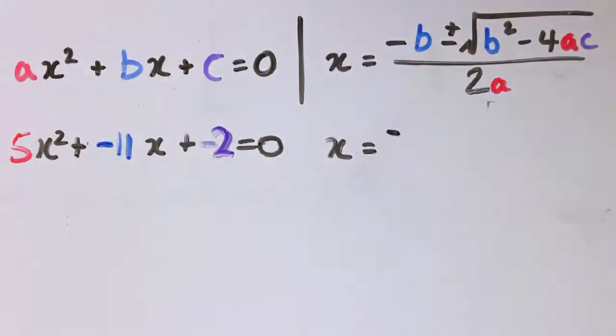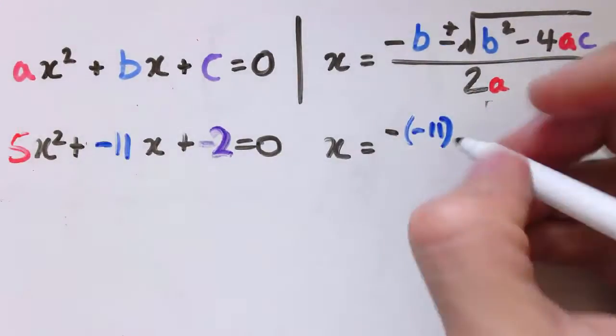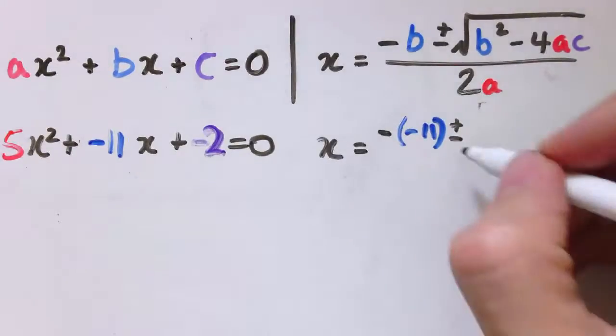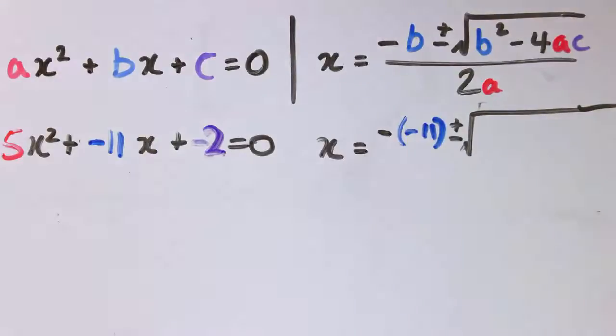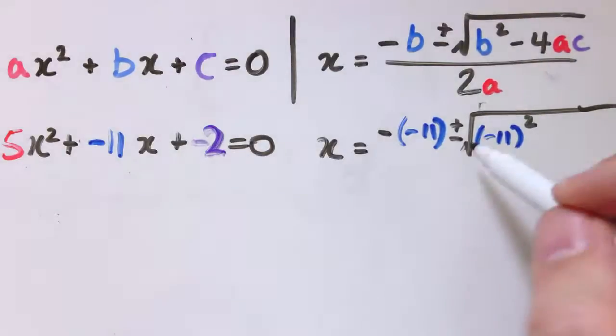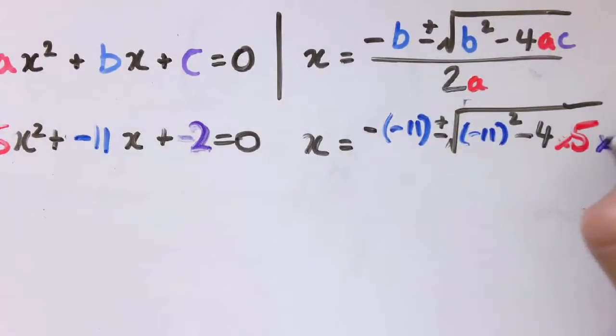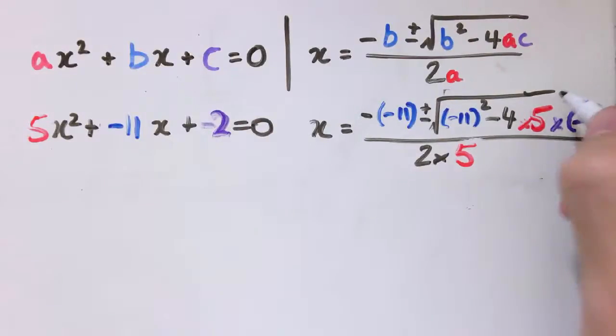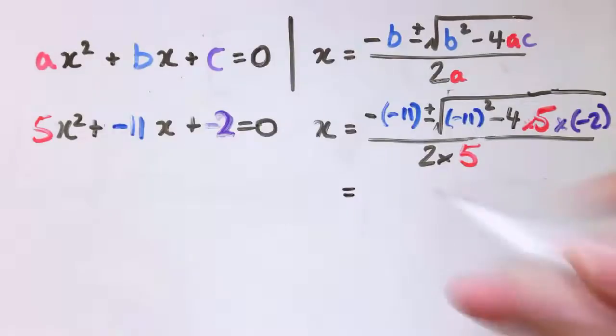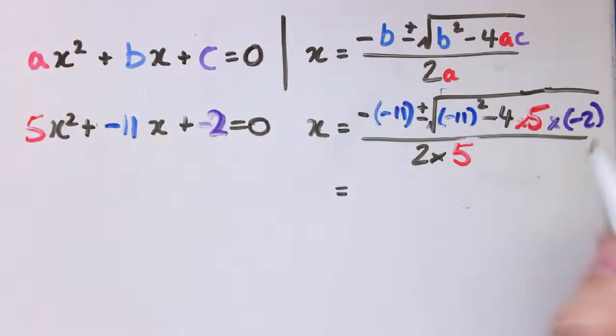So let's plug those into the formula here. We've got x is equal to minus minus 11. Remember, all the stuff in black stays exactly as it is. We don't change that at all. Plus or minus the square root of, now be careful here, it's minus 11 in brackets squared. Showing your working really here, you should have brackets. If you wrote minus 11 squared without the brackets, that's how people end up making that calculator mistake, and it also makes your working incorrect. We want bracket minus 11 squared minus 4 times 5 for the a and then times minus 2 all divided by 2 times 5.